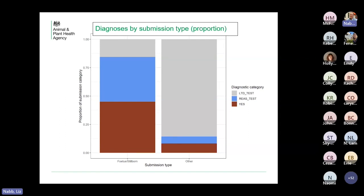Looking at that by proportion — it's often said that abortion diagnosis is quite disappointing, but you can see that 45 percent of the time we're actually getting a diagnosis when we get the fetus, which I think is pretty good. There's still a little grey even when we receive a fetus — sometimes it's just too autolyzed, or the fetus has been predated. So if you ignore the grey, really half the time when we have all the tissues available, we do actually get a diagnosis.